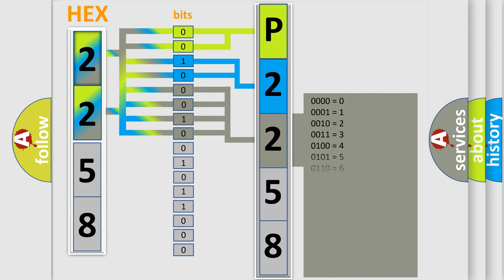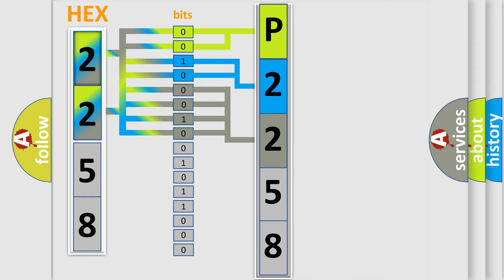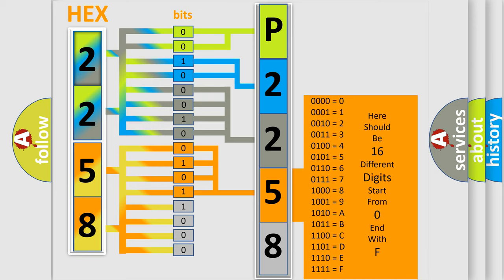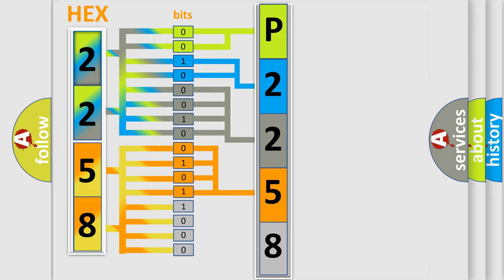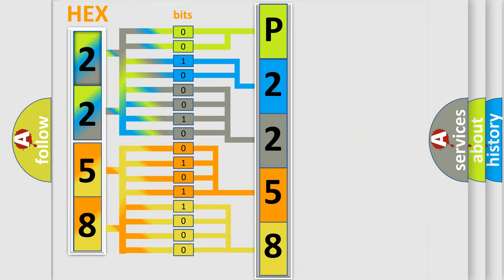The second byte is composed of a combination of eight bits. The first four bits determine the fourth character of the code, and the combination of the last four bits defines the fifth character. A single byte conceals 256 possible combinations. We now know in what way the diagnostic tool translates the received information into a more comprehensible format.